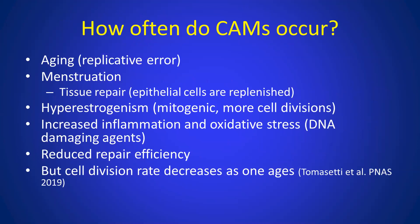How often do CAMs occur? That depends on aging, replication error, and for the endometrium — menstruation, because there's tissue injury and repair, hyperestrogenism. We know that estrogen is a mitogen, so it will induce more cell divisions, increased inflammation and oxidative stress, and also iron overload because of cyclic bleeding. Reduced repair efficiency has also been reported. However, once a person reaches a certain age and becomes old, the cell division rate decreases — another counter force.